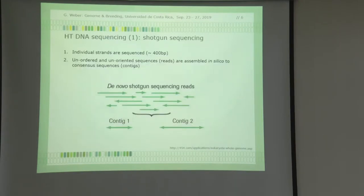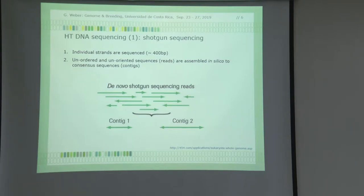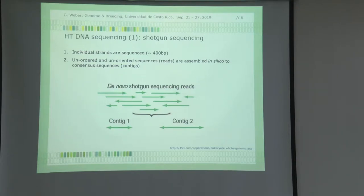This is the workflow. When you have high-throughput sequencing, remember this is shotgun — individual strands are approximately 400 base pairs long out of a 10 to the 9th base-pair-long genome. They're unordered, unoriented reads, and in silico you have to produce consensus sequences or contiguous sequences called contigs. You have reads going this way and that way, and you want to set from all those reads contigs — that would be your smallest assembled unit.